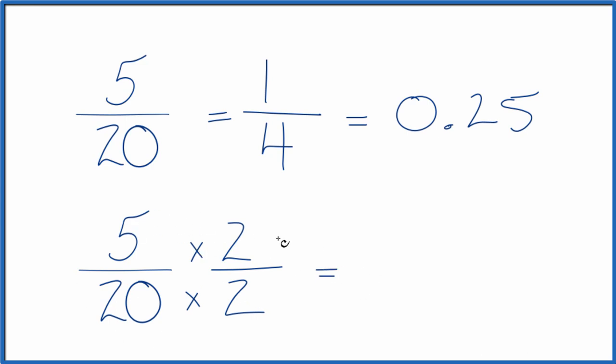We don't change the value, just the way it's represented, because now 5 times 2, that's 10, and 20 times 2 is 40. And 10/40, that's an equivalent fraction to 5/20. 10 divided by 40 gives you the decimal 0.25. It is equivalent to 5/20.